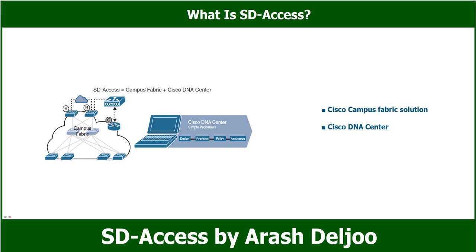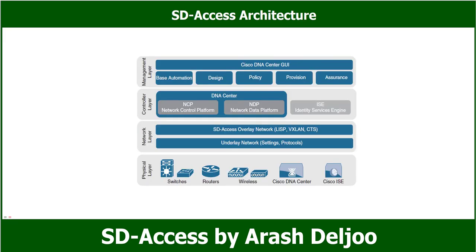The campus fabric is a Cisco validated fabric overlay solution that includes all of the features and protocols like control plane, data plane, management plane, and policy plane to operate the network infrastructure. When the campus fabric solution is managed via the CLI or API using NETCONF and YANG, it is considered a campus fabric solution. When managed via Cisco DNA Center, it is considered SD Access.